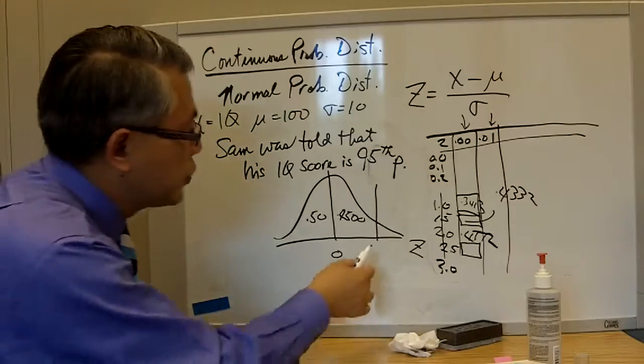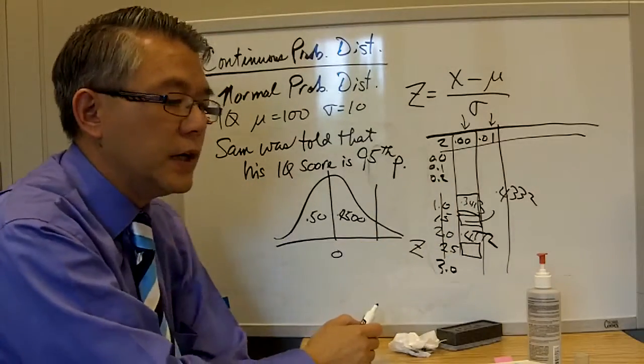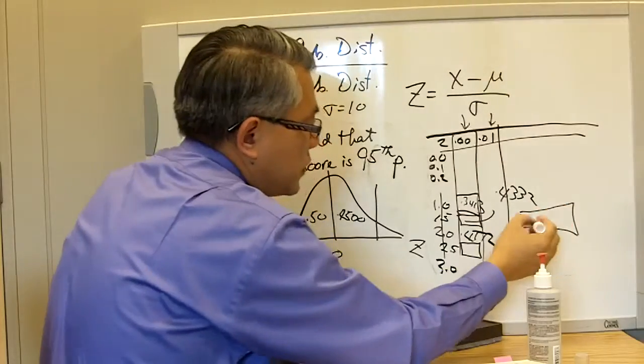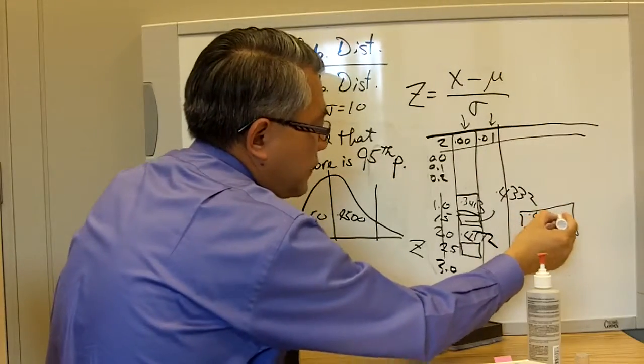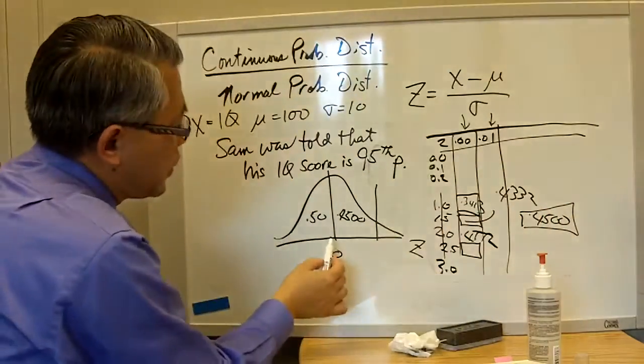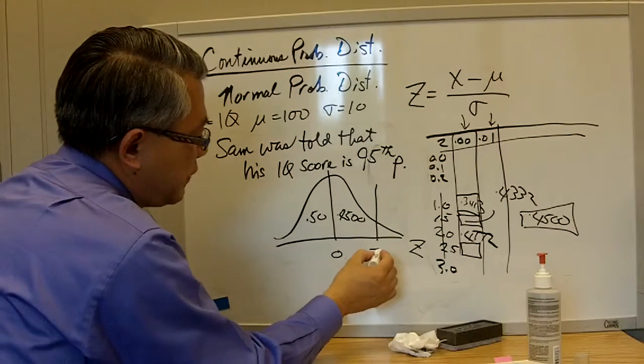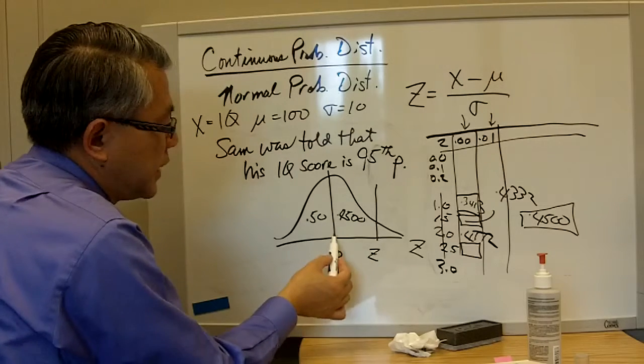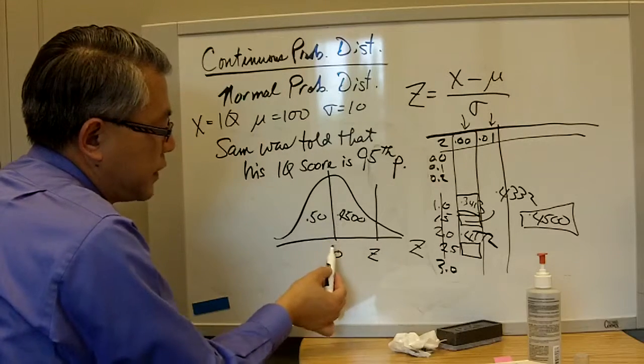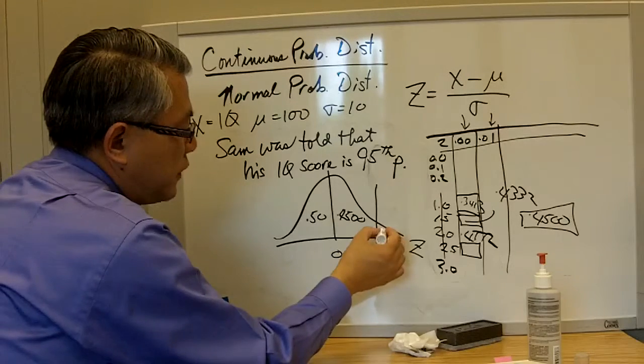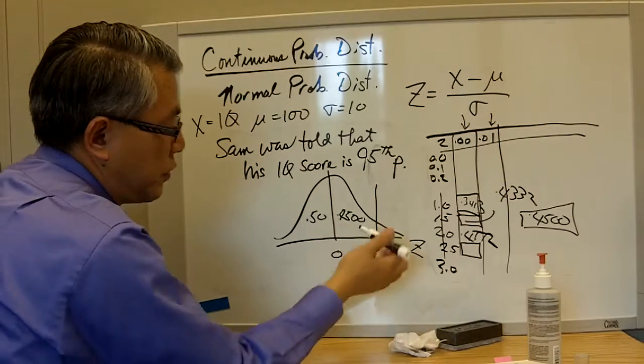So the way to do that is to go to the area under the normal curve table and find the score that is 0.4500, because what we are trying to do is to find that value - the Z value that is associated with having 45% from 0 to the center to that point, leaving only 5% to the right.